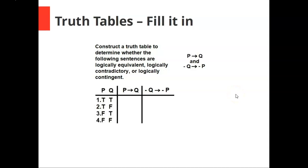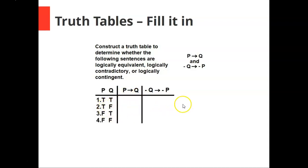Now we can fill in our truth table. For our conditional here, a conditional is only false when you have a true antecedent and a false consequent. The antecedent is p and the consequent is q, and you only have a true antecedent and a false consequent on row two. So our column is true, false, true, true.